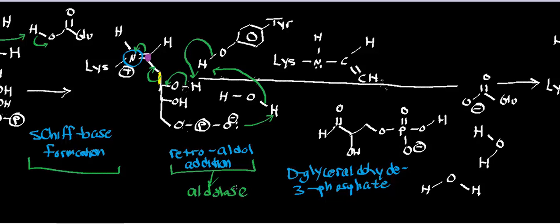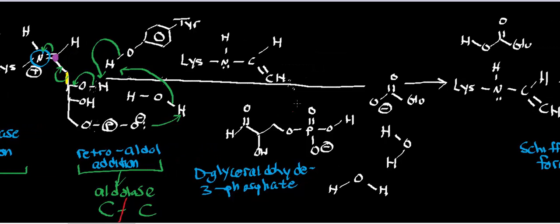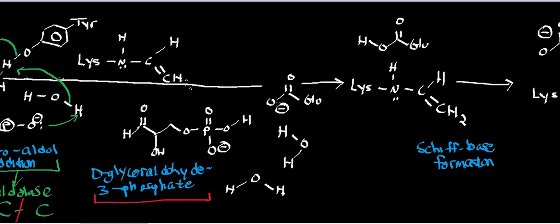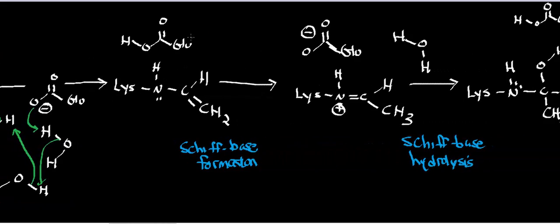Aldolases are enzymes that form aldehydes, and as a result they cleave carbon-carbon bonds — this is the step where the carbon-carbon bond was cleaved. One product is D-glyceraldehyde 3-phosphate. There's then a series of proton transfers to regenerate the glutamic acid in the active site: glutamate deprotonates water, which deprotonates another water, which deprotonates the phosphate of D-glyceraldehyde 3-phosphate. The anionic form of glyceraldehyde 3-phosphate exits the active site.